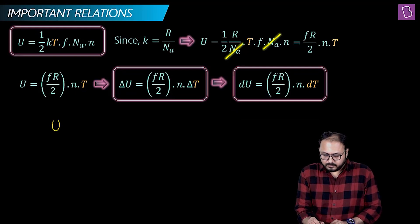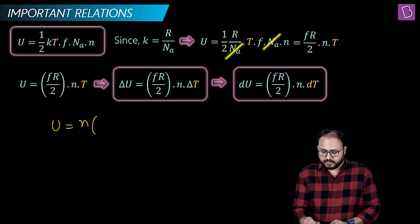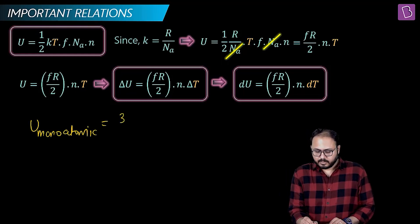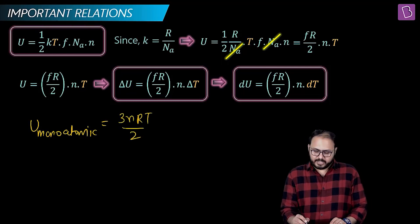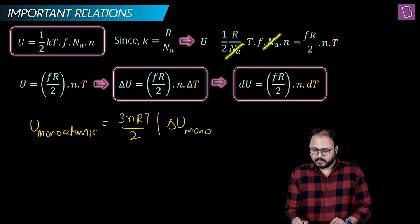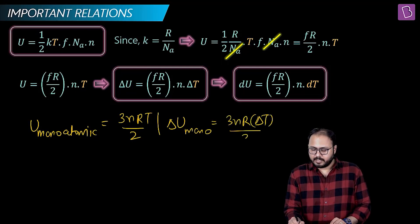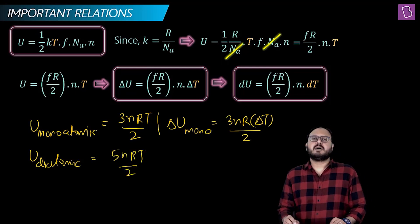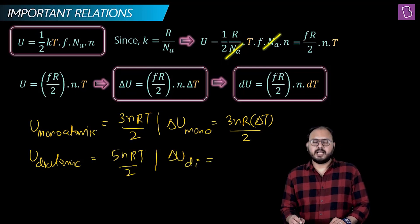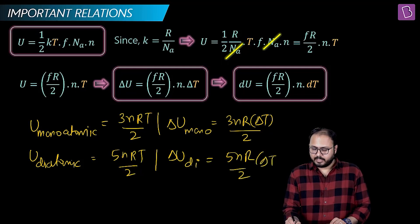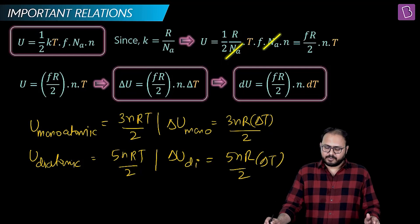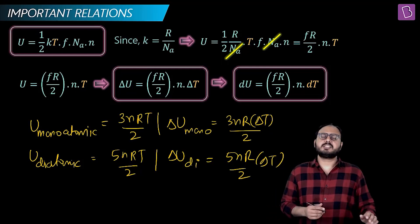So U, I'll write it in a proper way: n. So you are saying U and ΔU monoatomic will be equal to 3nRT by 2, really? And ΔU monoatomic will be 3nRΔT by 2, really? U diatomic: 5nRT by 2. ΔU diatomic will be 5nR by 2 ΔT. Hey guys, did you just prove that internal energy is a function of only temperature? 5/2 nR, they will remain constant. So it's solely a function of what? Temperature.